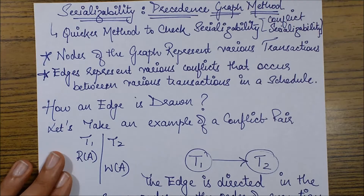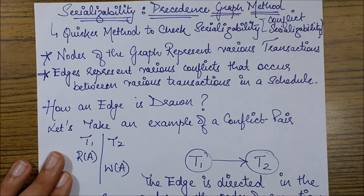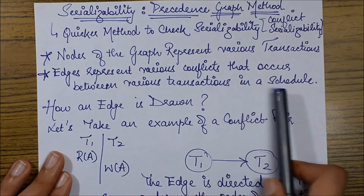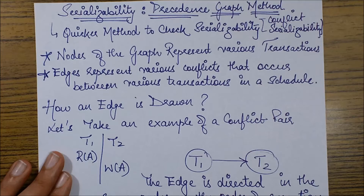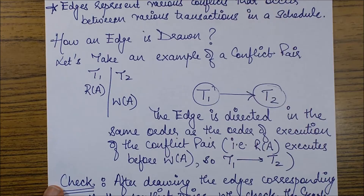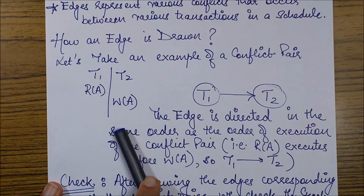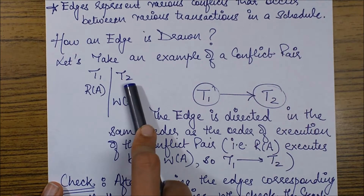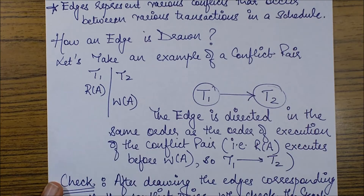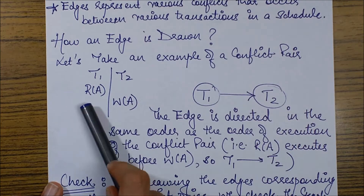In case you are not aware about the conflict pairs, please have a look at the previous video. Edges represent various conflicts that occur between various transactions in a schedule. Now how do we draw an edge? Let's take an example. We have a schedule with two transactions T1 and T2 which have certain operations — read and write.